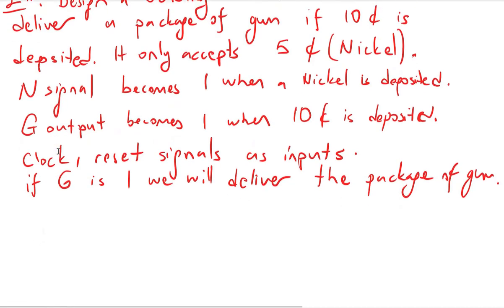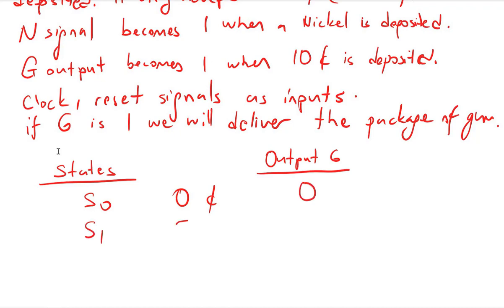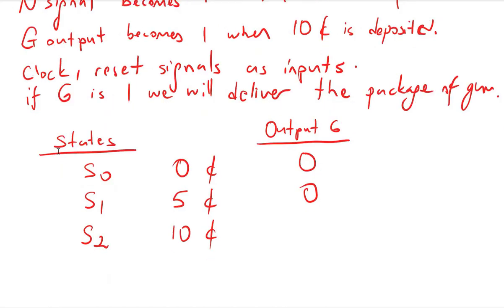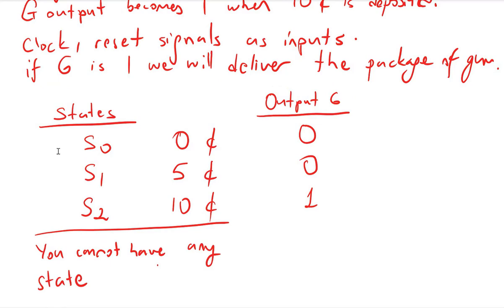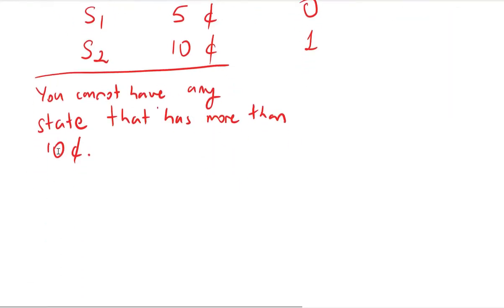The first step is to determine our states. State S0 means there are 0 cents in the vending machine, so output g is 0. State S1 means there are 5 cents in the machine, and output g is still 0. State S2 means there are 10 cents in the machine, and output g becomes 1. We don't need any state beyond 10 cents, because as soon as we reach S2 the output is 1 and we go back to S0.